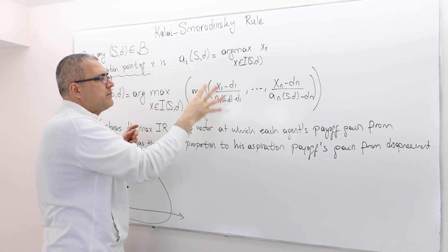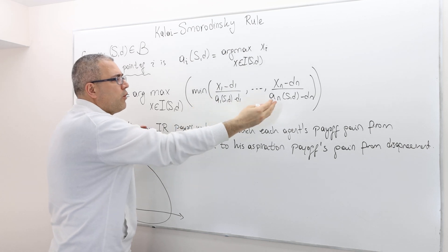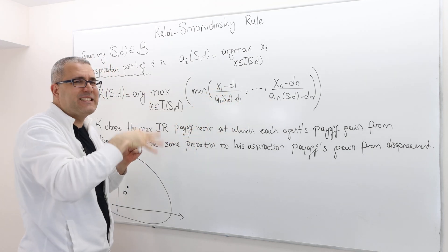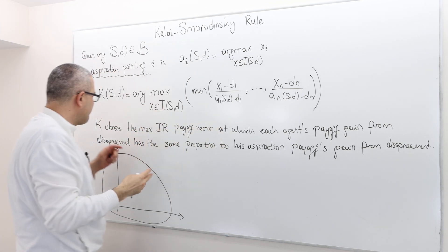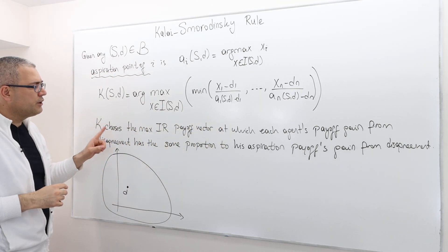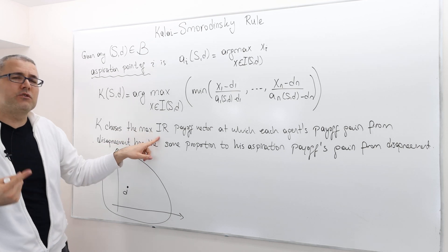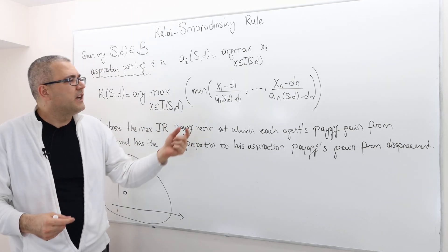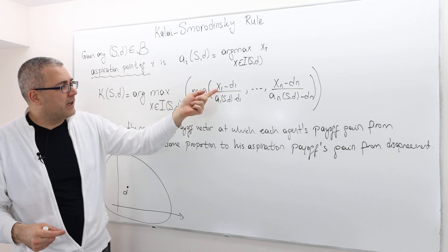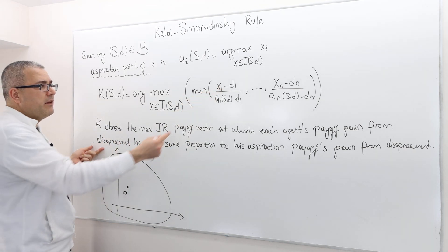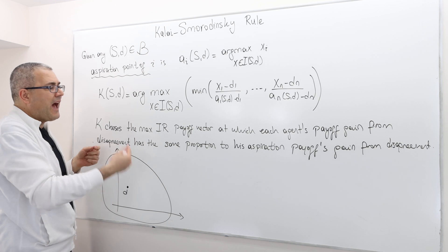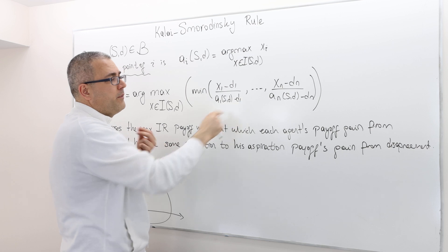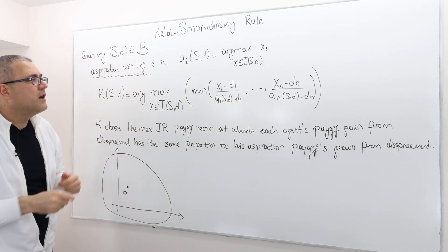We would like to maximize this ratio, but also keep everybody's ratio the same. Intuitively, the rule K chooses the maximum individually rational payoff profile at which each agent's payoff gain from disagreement (Xi minus Di) has the same proportion to his aspiration payoff's gain from disagreement.